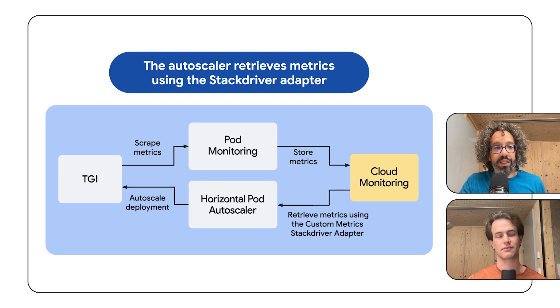You need to install the custom metrics Stackdriver adapter to make sure the autoscaler has access to the metrics. To wrap up, we showed you how to set up autoscaling for a Text Generation Inference workload on GKE using queue size as the metric. If you want to do this yourself, find the link to the tutorial in the description. Thanks for watching.